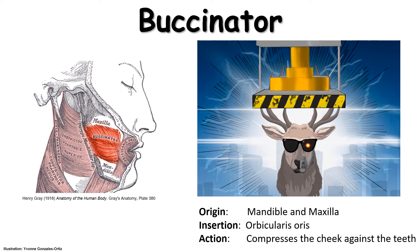Lastly, in terms of its action, the buccinator's action is to compress the cheek. If you recall from the movie, the way that the protagonist Sarah Connor eliminated the Terminator was they were in a warehouse and the Terminator crawled through a big hydraulic press. She turned the press on and it compressed or crushed the Terminator. So here I've drawn a hydraulic press pressing down on the buccinator, similar to the movie, to help you recall that the buccinator's action is to compress the cheek.